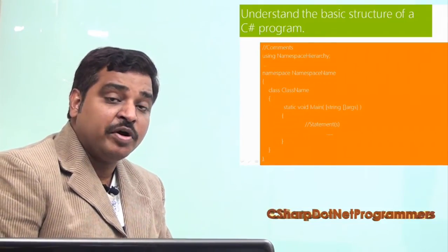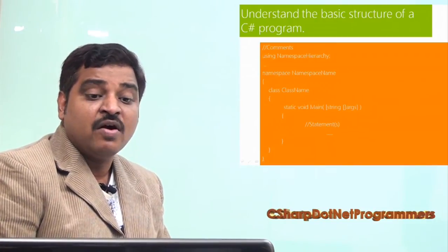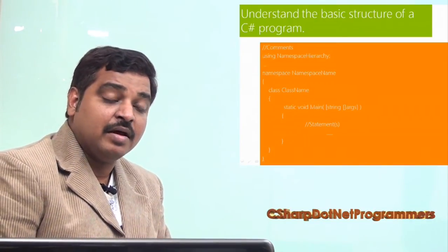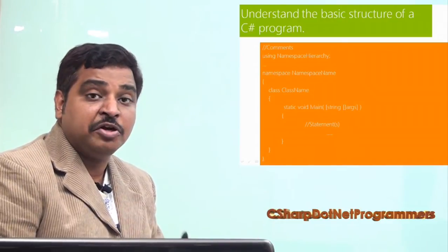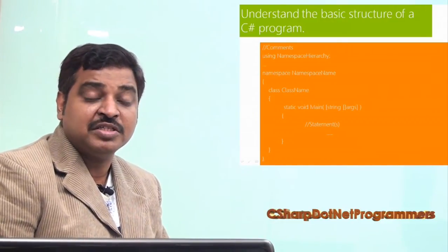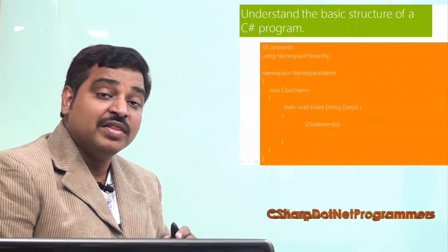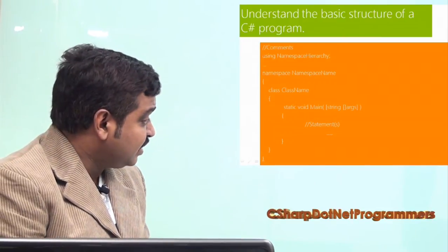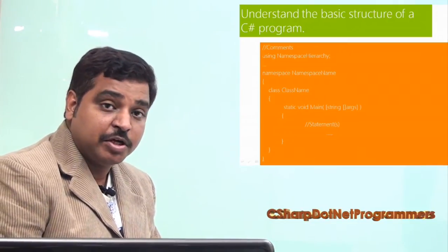The entry point of a C# program starts with main, where the return type may be void or integer. It may accept some kind of strings as parameters, or may not. Within the main method, we will try to write the statements and close the application.